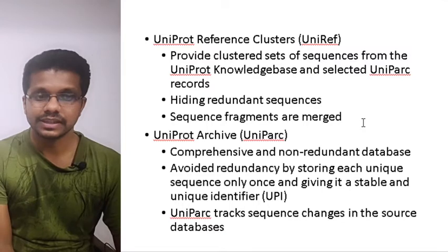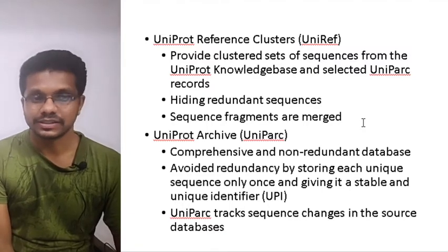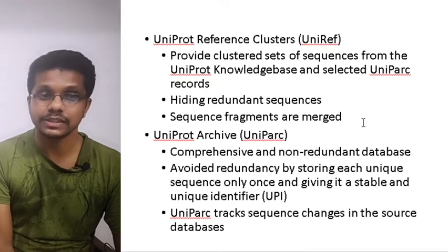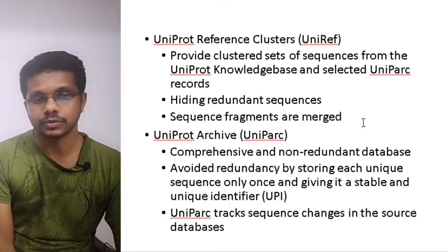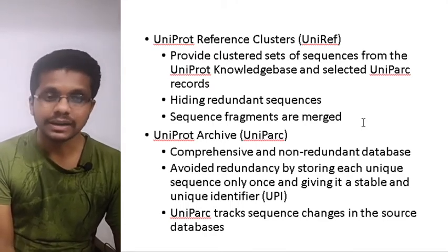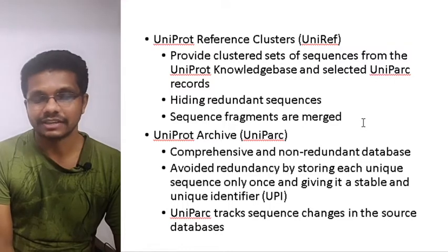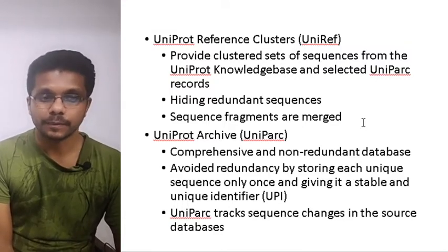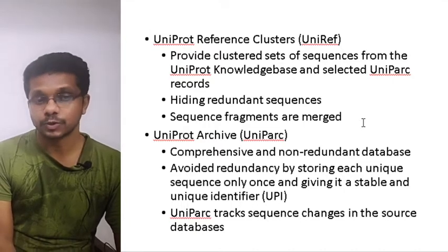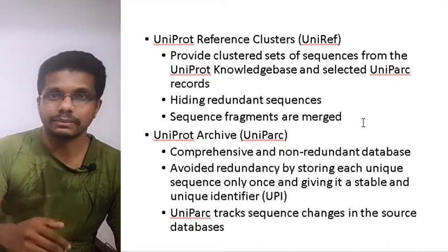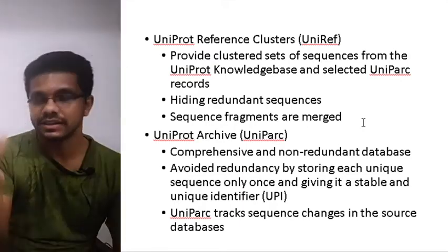UniProt Archive is named UniParc. UniParc is a comprehensive non-redundant database. Its non-redundancy is achieved through the mechanism of giving a stable unique identifier, or UPI, to each sequence. UniParc also tracks changes in the source database, making it essentially a meta-database that retrieves sequences from different smaller databases.